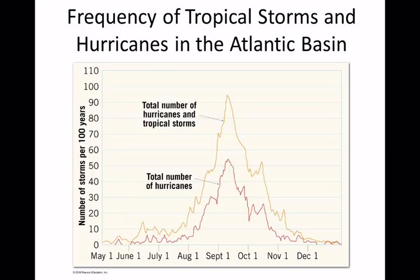The peak hurricane season in the north Atlantic ocean basin is around September. On the graph, the yellow line shows tropical storms and the red line shows those tropical storms that mature into tropical cyclones — and remember, a tropical cyclone is what we call a hurricane.